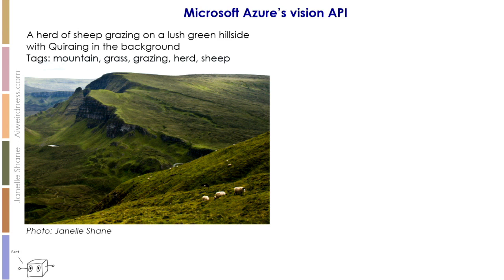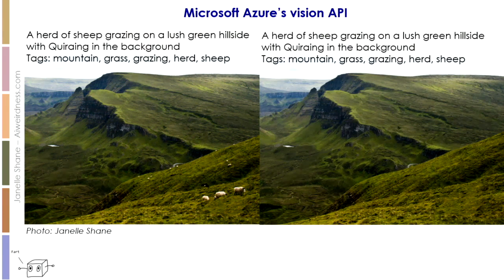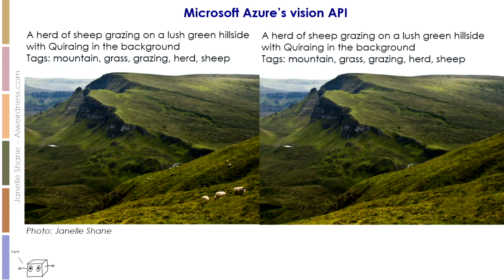Here's another example, this time image recognition. This is Azure's API, and I put in one of my vacation photos. This is actually a really impressive job — not only did it see the sheep, it also knew exactly which hills on the Isle of Skye I was standing on at the time. But something interesting happens if you look at the picture on the right: I have Photoshopped out every single sheep from this picture, and yet they're still there in the caption and in the tags.